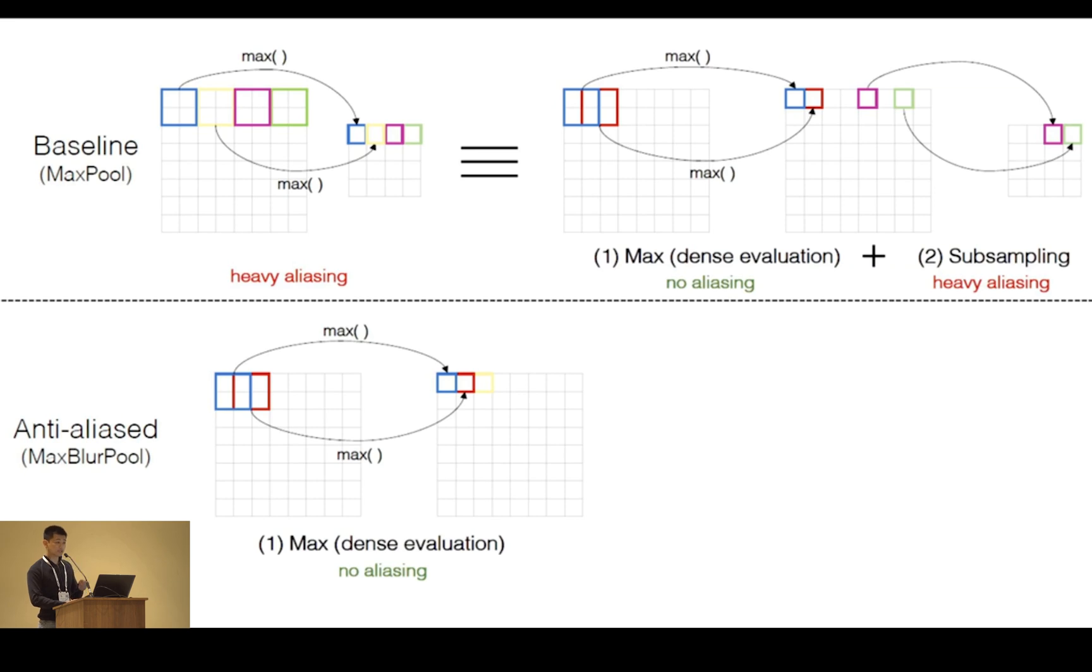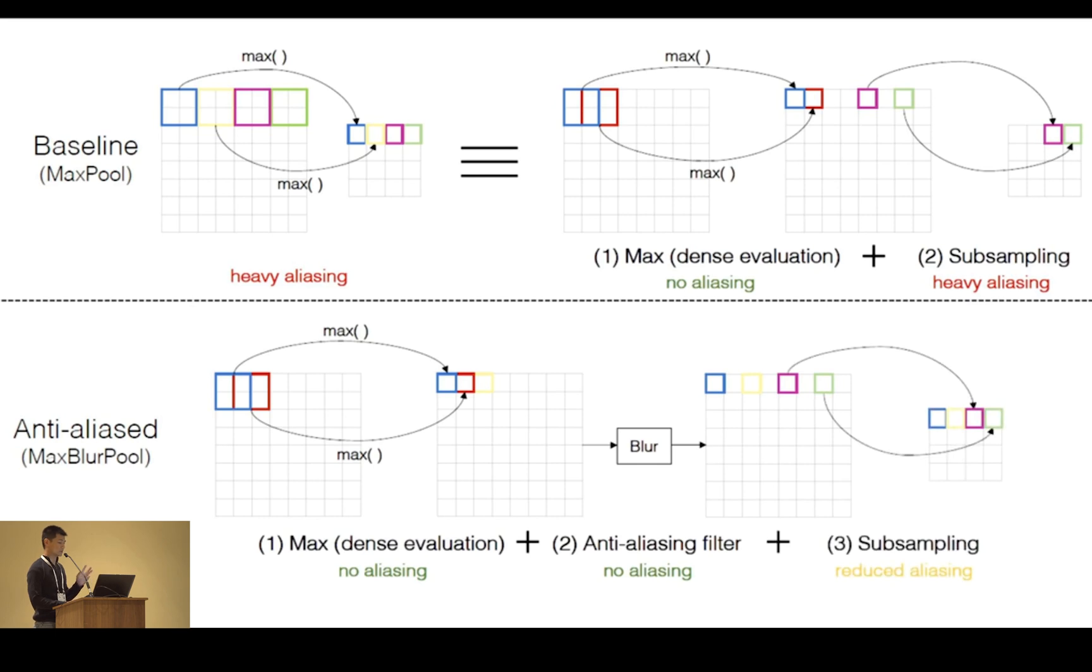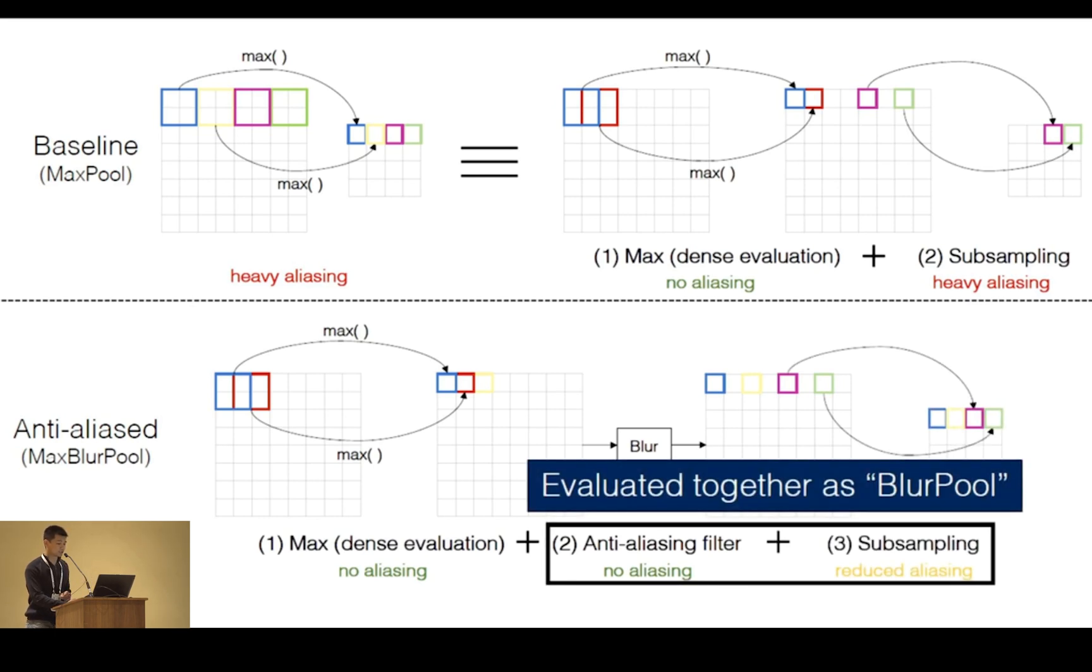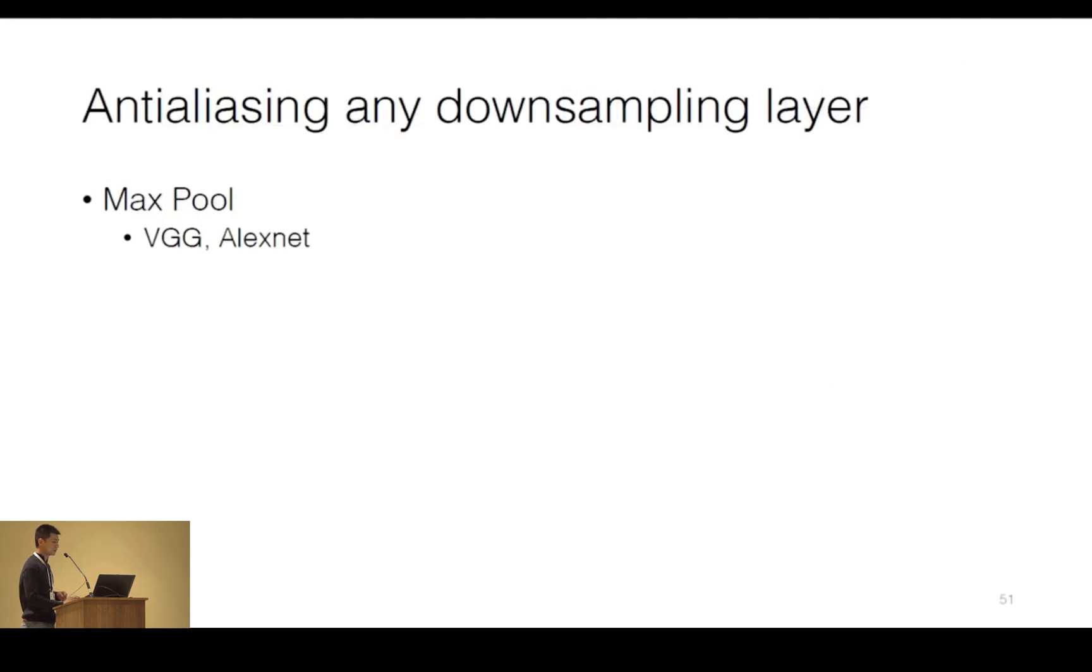What's at fault is the subsampling operation. And we can reduce the aliasing in it by adding a blur filter to the intermediate feature map before doing the subsampling. And these two operations can be evaluated together. So this bottom row here indicates our anti-alias version of max pooling. And instead of just one line of code, we can add just an additional line of code to do so.